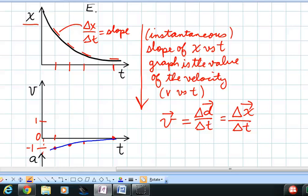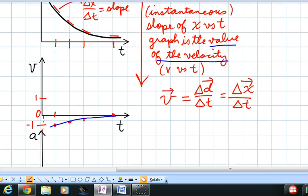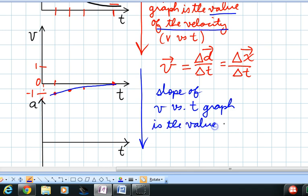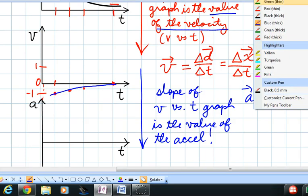Alright. So now let's take this one step further. If the slope of the position or the x versus t graph is the value of the velocity graph, the velocity versus time graph, then what do you suppose is the slope of the velocity versus time graph. You guessed it. The slope of the velocity versus time graph is the value of the acceleration. And again, we can see this because acceleration is defined as a change in velocity over a change in time. And that is the slope of the velocity graph.